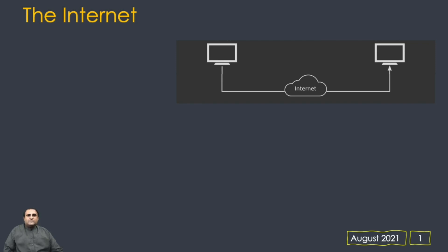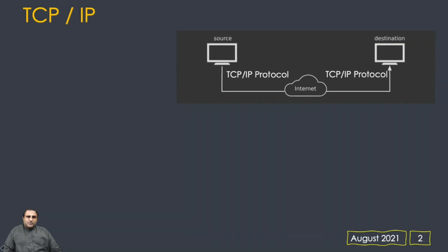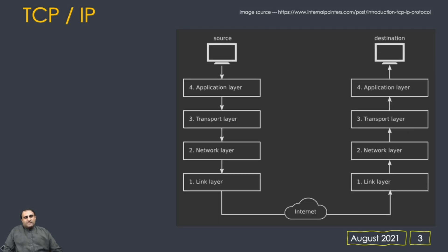The internet, as we know, is the fundamental global network that connects computing devices across the globe. The internet is enabled by the TCP/IP protocol, which is the fundamental protocol suite that enables communication between devices. If we see the implementation of TCP/IP, it is actually implemented in four layers, starting from the link layer up to the application layer.